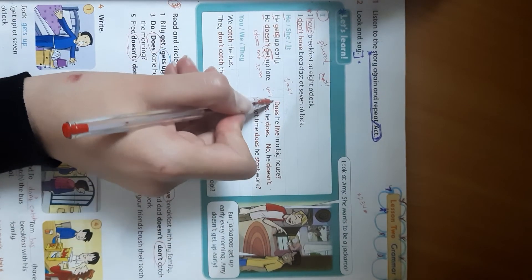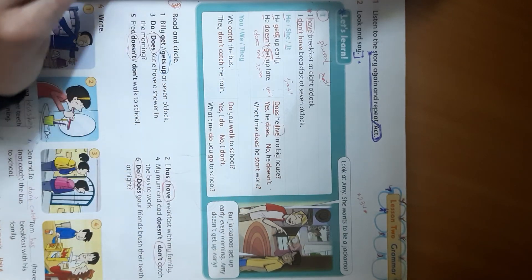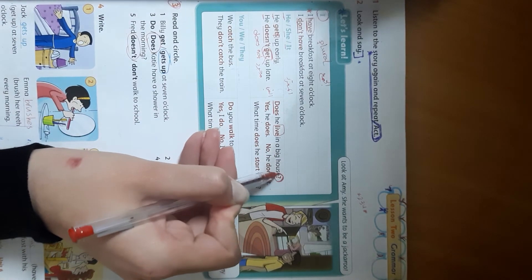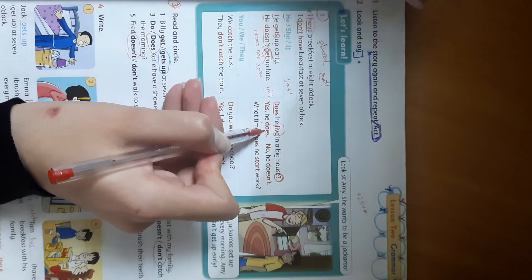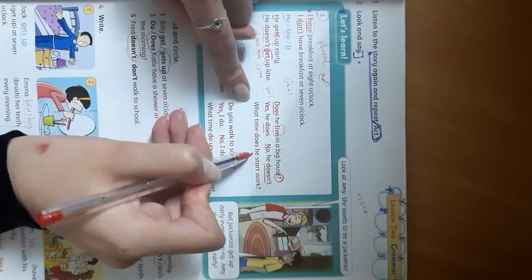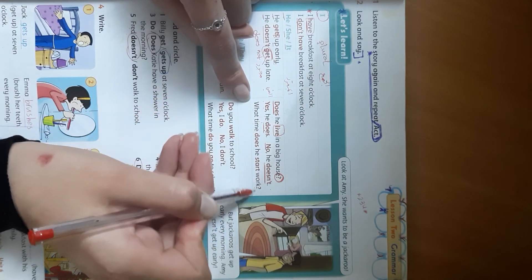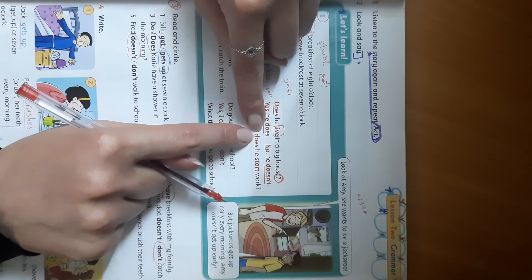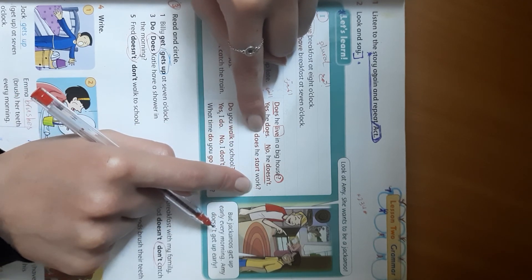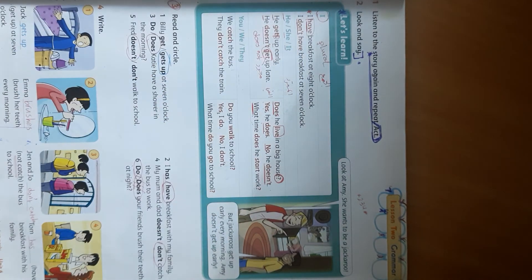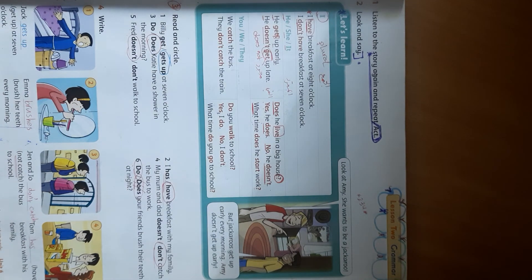For the question, we use 'does' and the verb is base form with no addition — even when talking about something singular. 'Does he live in a big house?' Answer: 'Yes, he does' or 'No, he doesn't.' For WH questions: 'What time does he start work?'